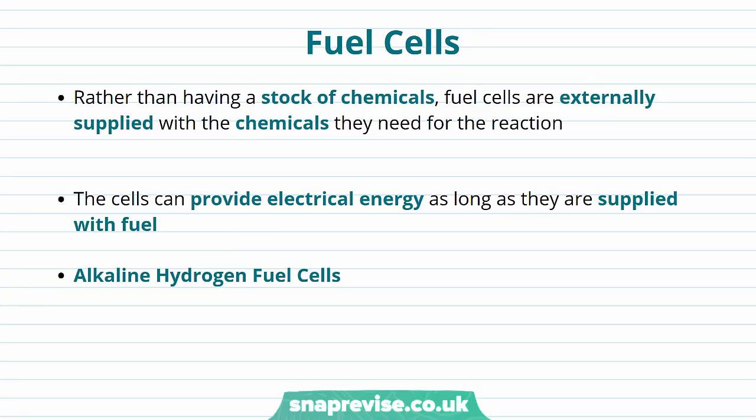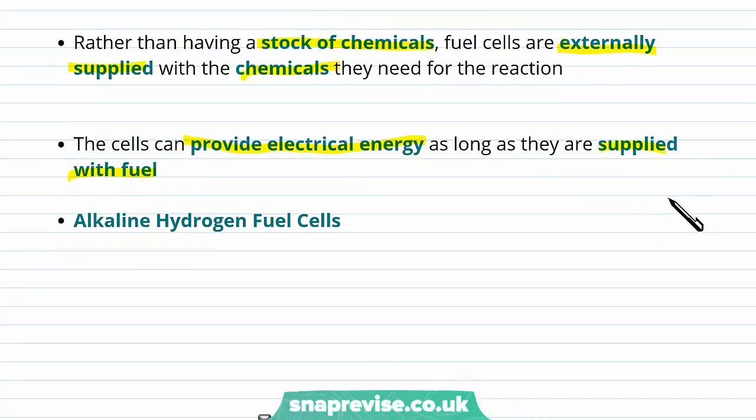In all the examples we've looked at so far, we've had a stock of chemicals which have been reacting, and then either disposed of or recharged, but instead of this, fuel cells provide another way to generate electricity. Fuel cells are externally supplied with the chemicals they need for the reaction. Because of this, the cells can provide electrical energy for as long as they are supplied with fuel. They never run out of charge as long as they have enough fuel.